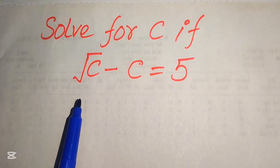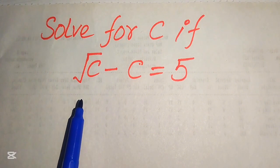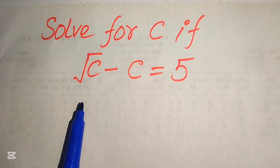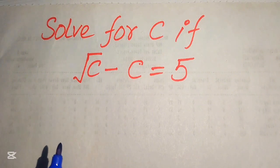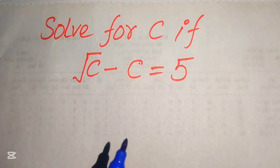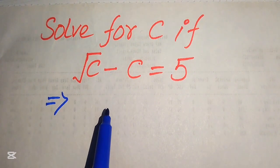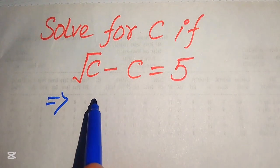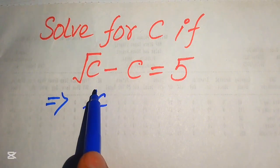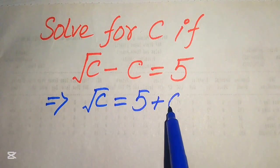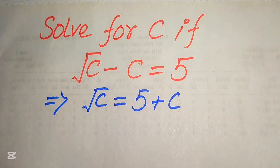Here we see that we have a radical term involved in the left hand side. Now, first we need to remove this radical sign from here. For this, we will write this radical term separately and move all of the other terms to the right hand side. So we move this minus c to the right hand side and it will be written as square root of c equals to 5 plus c.